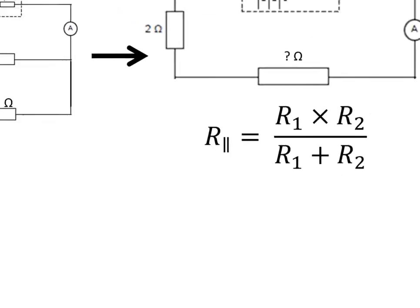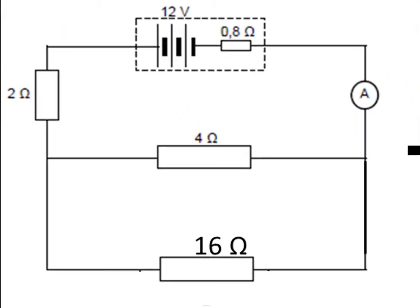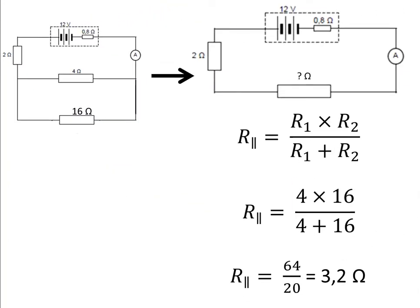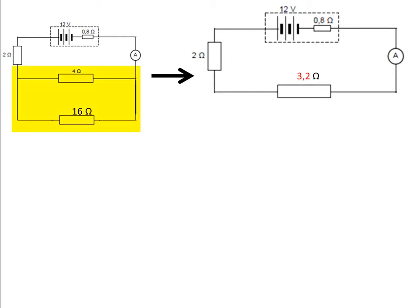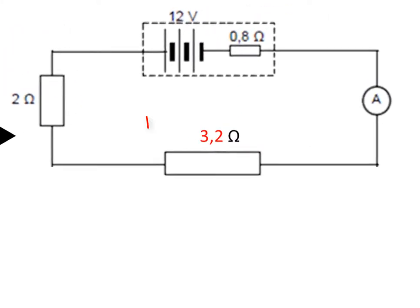Substitute values into this equation and find the effective resistance of the parallel section. R1 is 4 ohms, R2 is 16 ohms. 4 times 16 is 64, 4 plus 16 is 20, and 64 divided by 20 is 3.2. So we can replace the 4 and 16-ohm resistors in parallel with a single resistor of resistance 3.2 ohms.